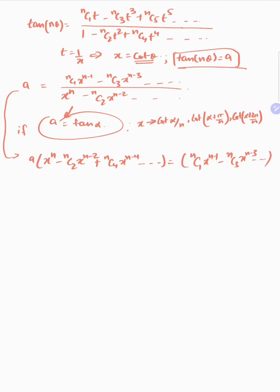Bringing everything to one side, it will be: A·x^n minus nC1·x^(n−1) minus A·nC2·x^(n−2) plus nC3·x^(n−3) plus A·nC4·x^(n−4), and so on, is equal to 0.